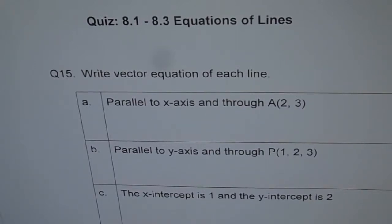Question 15: Write vector equation of each line. Part a: parallel to x-axis and through point A which is 2, 3. Part b: parallel to y-axis and through P(1, 2, 3). Part c: the x-intercept is 1 and the y-intercept is 2. This is to test your knowledge on lines. You need to figure out all these equations. I'll suggest make a sketch and then write your equation. It may help you visualize. Vectors is all about visualization. Write down your answers and then look into my suggestion.